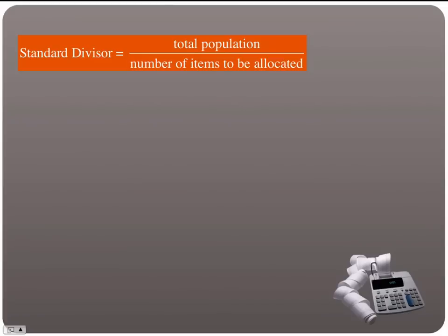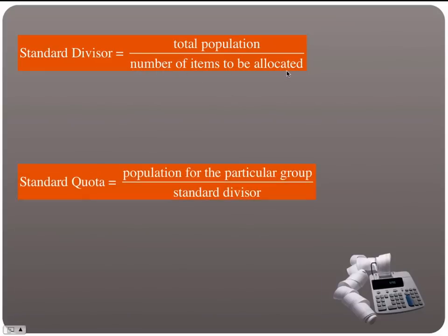Some terms we need for these problems: the standard divisor is a number you divide things by, found by taking the total population divided by the total number of items to be allocated. We can use the standard divisor to find the standard quota, which is the population for a particular group divided by the standard divisor.